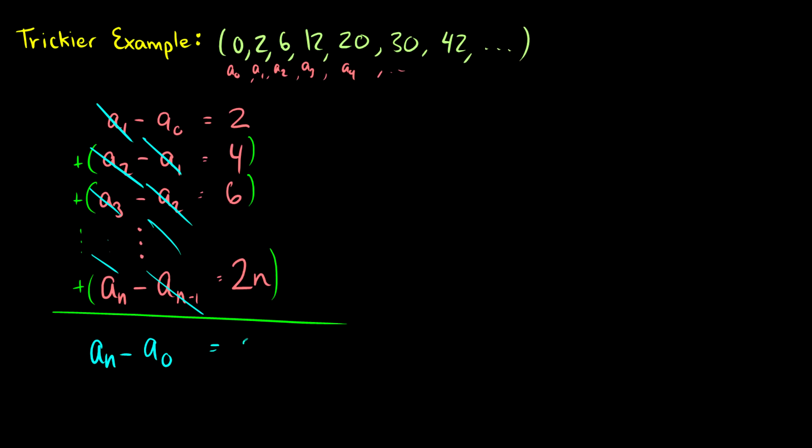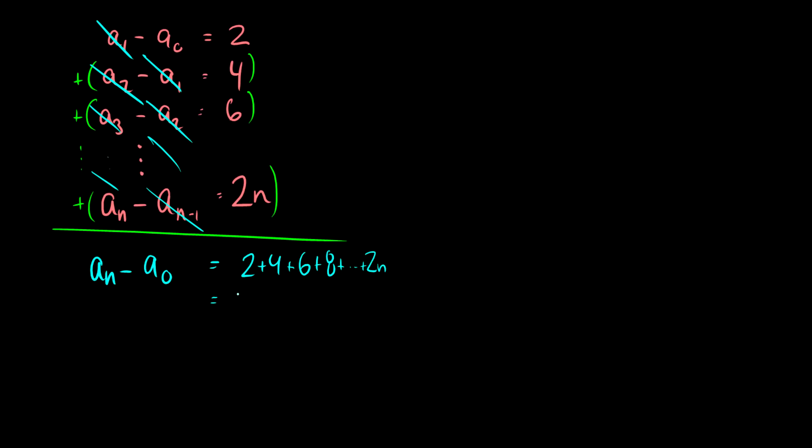And this is going to be equal to 2 plus 4 plus 6 plus 8, all the way up to plus 2n, which we can just factor out a 2. And then we get 1 plus 2 plus all the way up to plus n, which we can write as 2 times the sum from i goes to 1 to n of i.